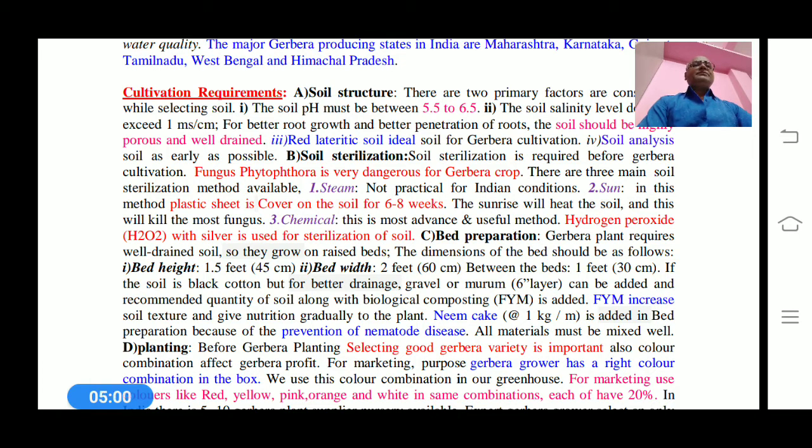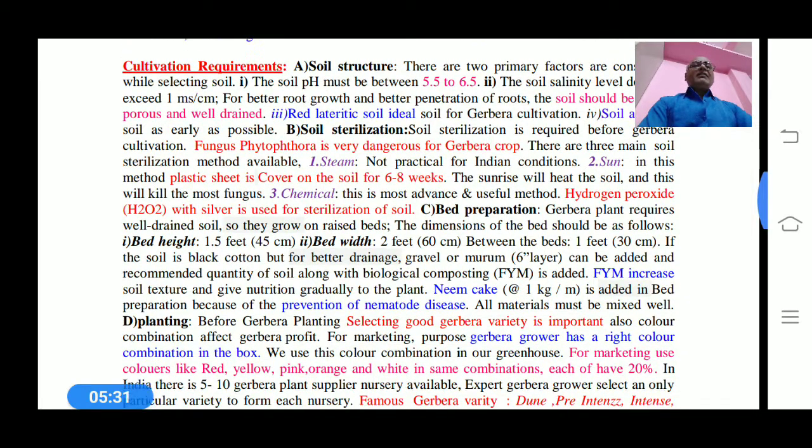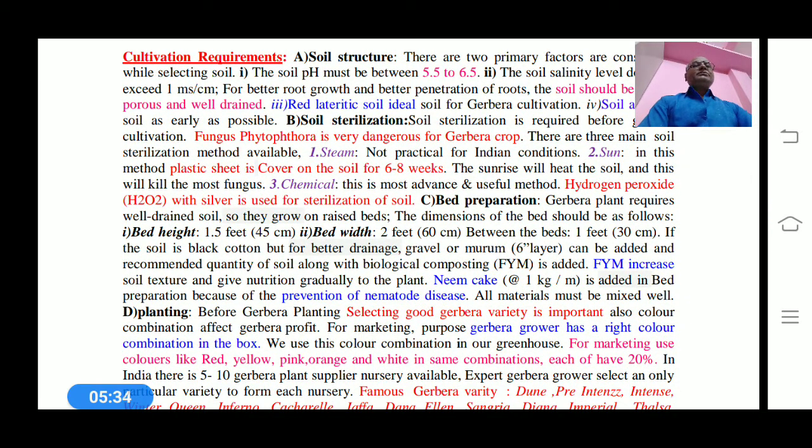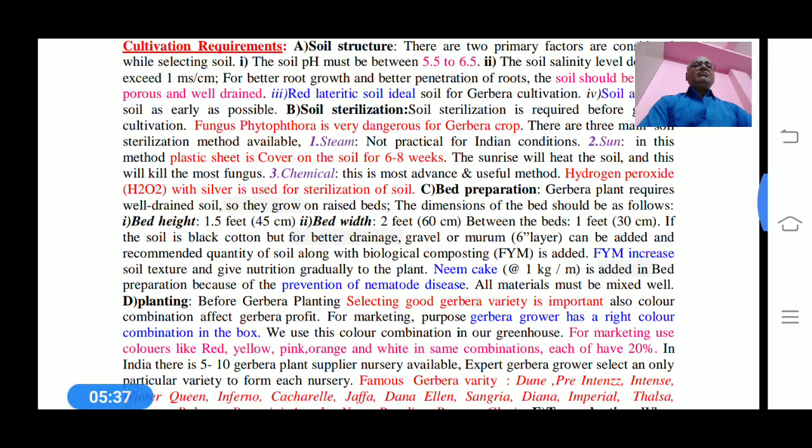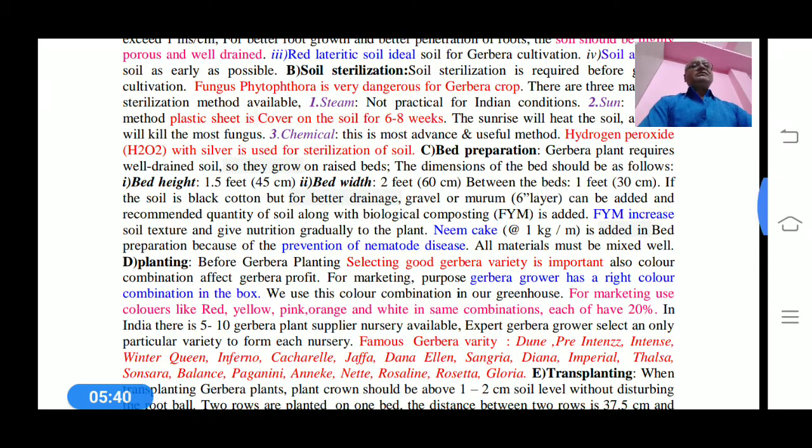Soil sterilization can be done with chemicals, steam methods, or sun methods. The steam method is not practical for our area, but the sun method is important. In this case, plastic sheets are covered on the soil for about six to eight weeks. The heat increases automatically and kills soil-borne pathogens.